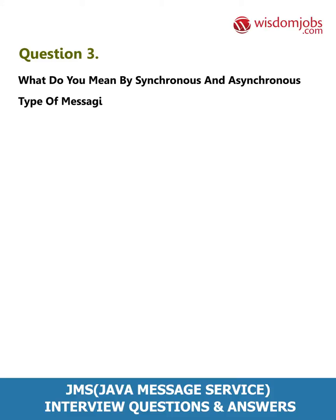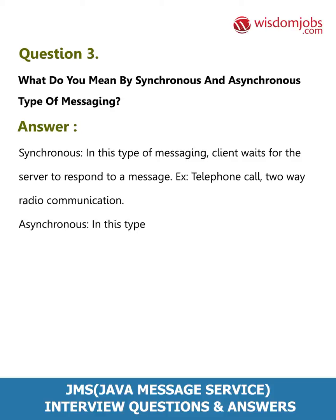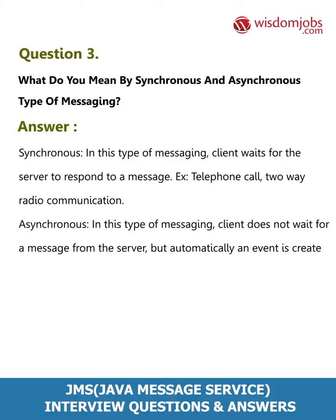Question 3: What do you mean by synchronous and asynchronous types of messaging? Answer: Synchronous — in this type of messaging, the client waits for the server to respond to a message. Examples: telephone call, two-way radio communication. Asynchronous — the client does not wait for a message from the server, but automatically an event is created to trigger a message from the server. Examples: email, text messaging, blog posting.